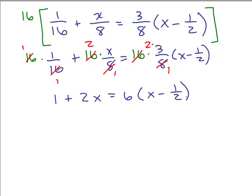So what do we have? We've got 1 plus 2x equals 6 times (x minus 1/2). Now, notice that I didn't get rid of the 1/2 inside the parentheses first. I was just dealing with the rest of these. But if you do your distributive property now, you end up not having a fraction. So we have 1 plus 2x equals 6x minus 3.